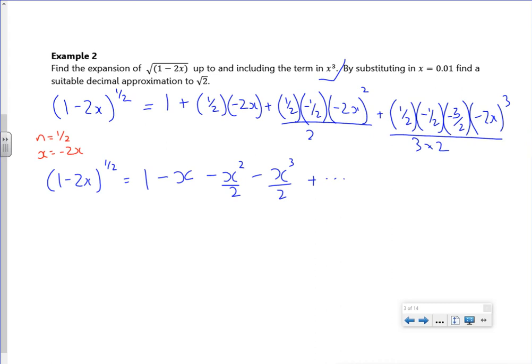by substituting x is 0.01. Right. So if I put x is 0.01 in there, I've got 1 minus 2 lots of 0.01. I've actually got root 0.98.